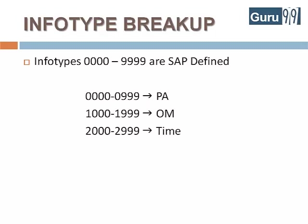Info types 2000 to 2999 store time related data like your attendances, absences, and your paid leave quota. Info types 4000 to 4999 store recruitment related data.